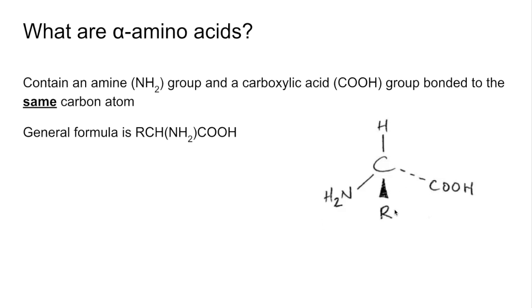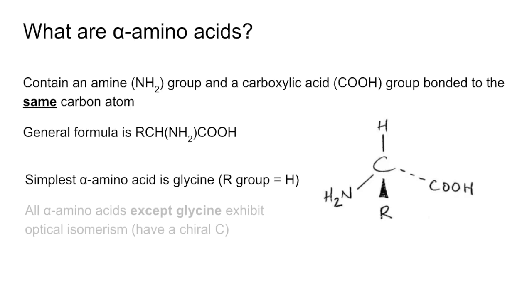This R group here is a variable group. The simplest alpha amino acid is called glycine, where the R group is just an H. All alpha amino acids, except glycine, can show optical isomerism, and that's because they have a chiral carbon.